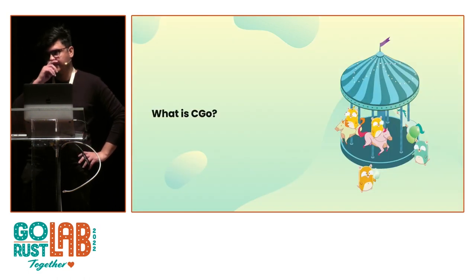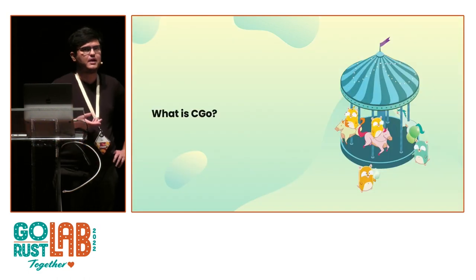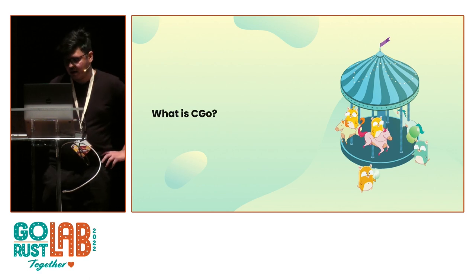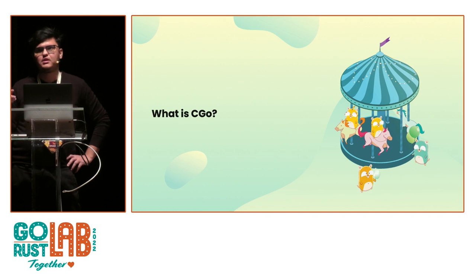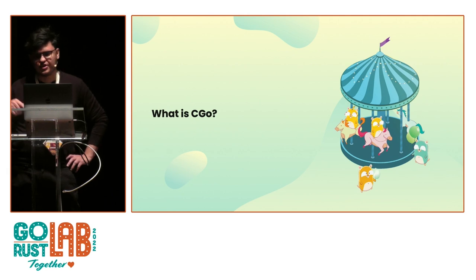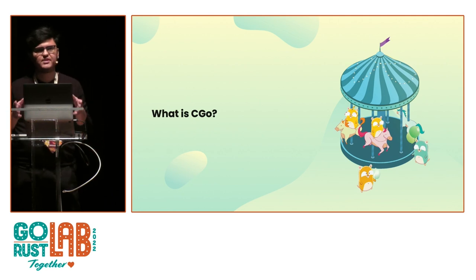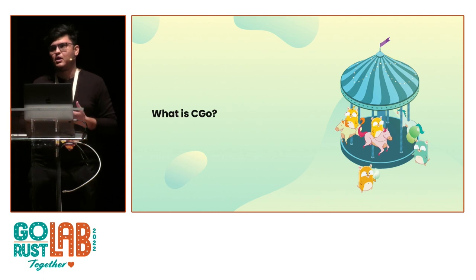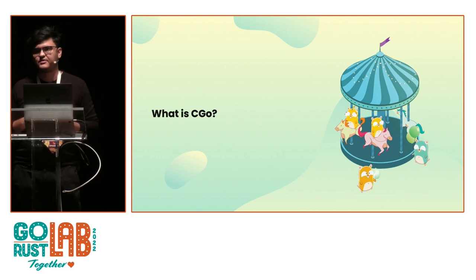Instead, I'm here to tell you how to get, in my opinion, a better experience out of CGo. And actually, if there's anybody here that is a Rust lab refugee who decided to switch here just for this talk, this talk is going to be about CGo. But everything I'm going to say about CGo will apply one-to-one to Rust, in the case that your Rust code needs to also depend on C or C++ code.